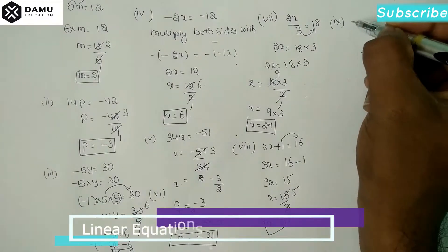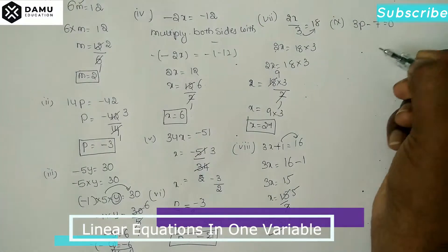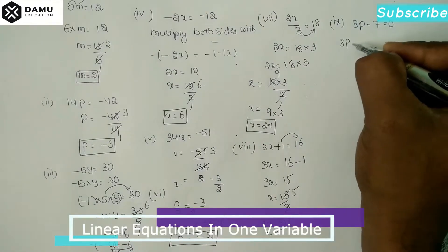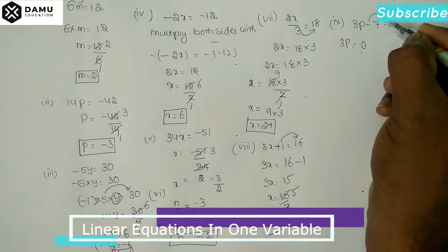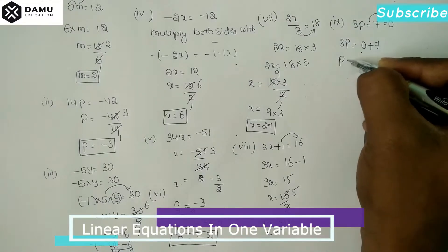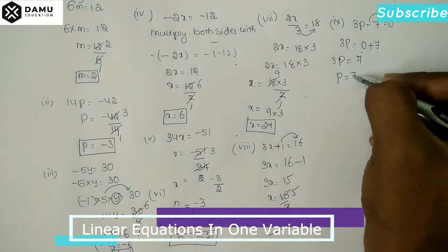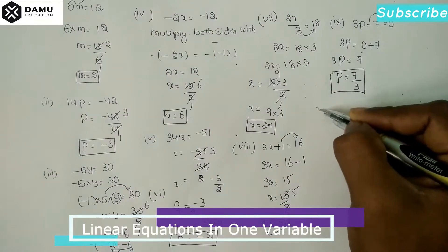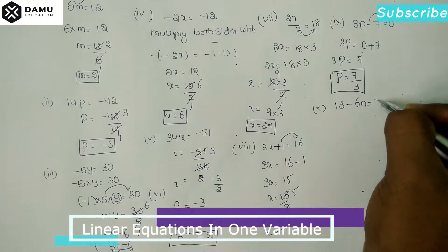The ninth one: 3p - 7 = 0. Keep 3p here; the -7 shifts to the right side and becomes +7, so 3p = 7. Therefore p = 7/3.